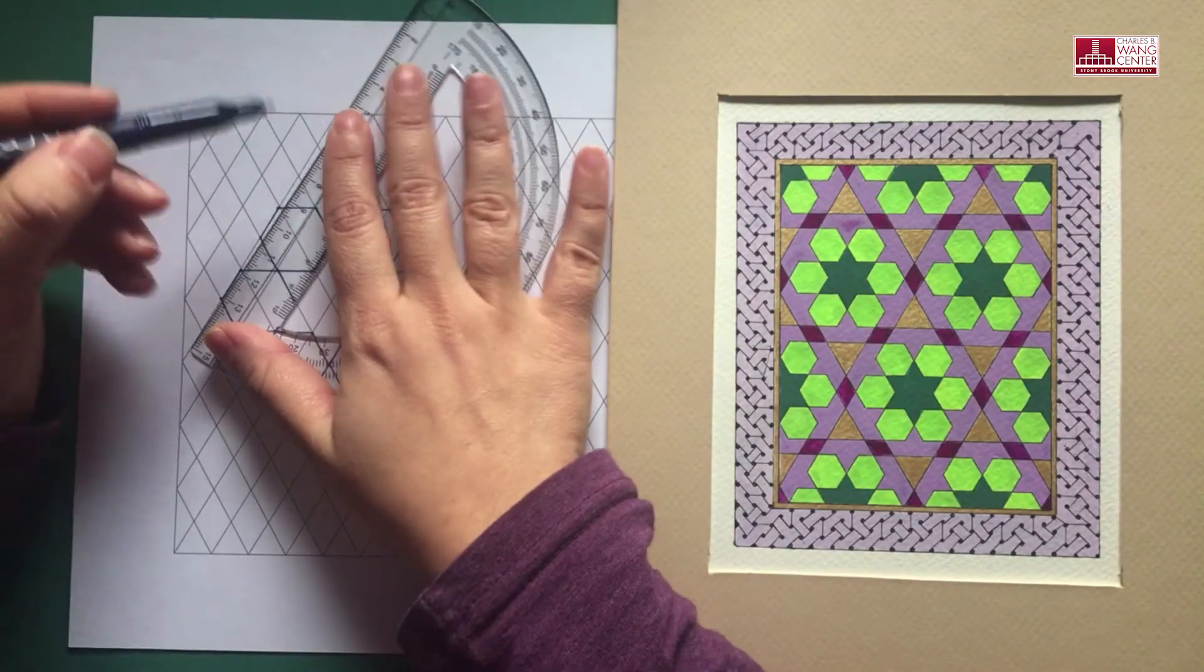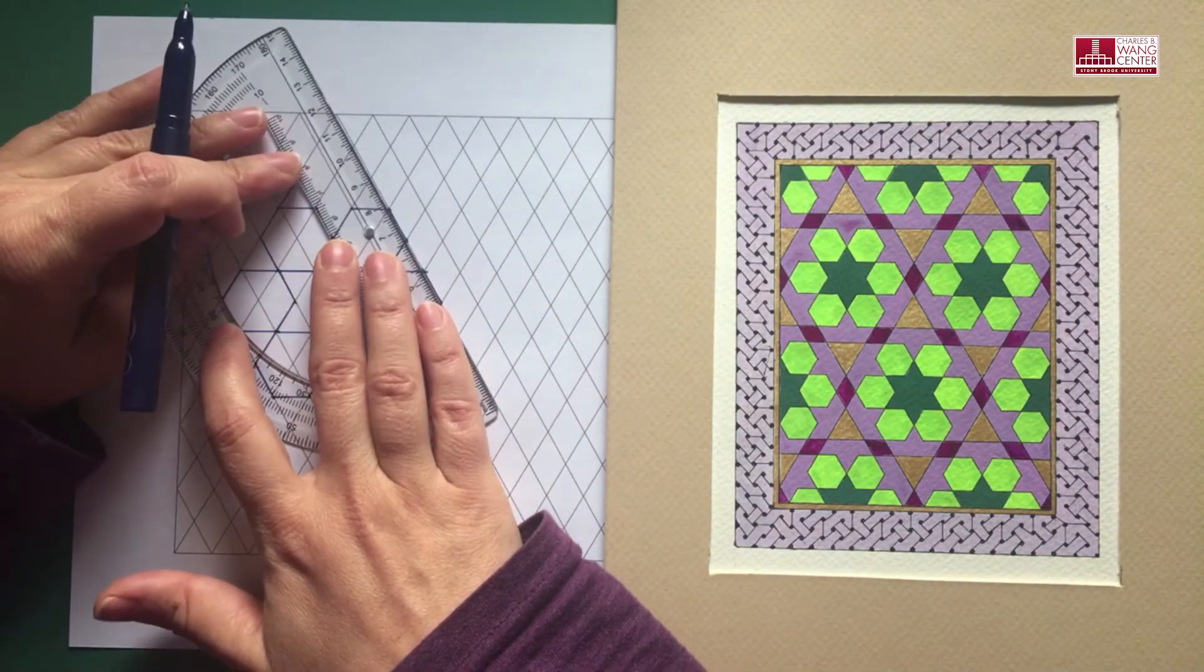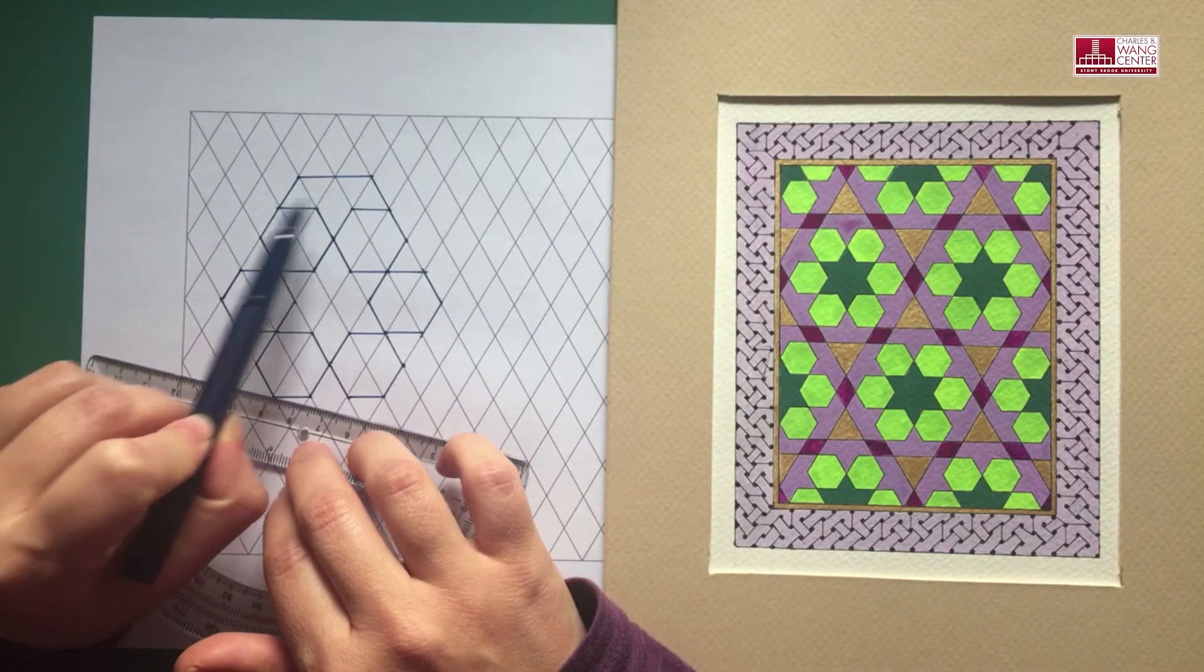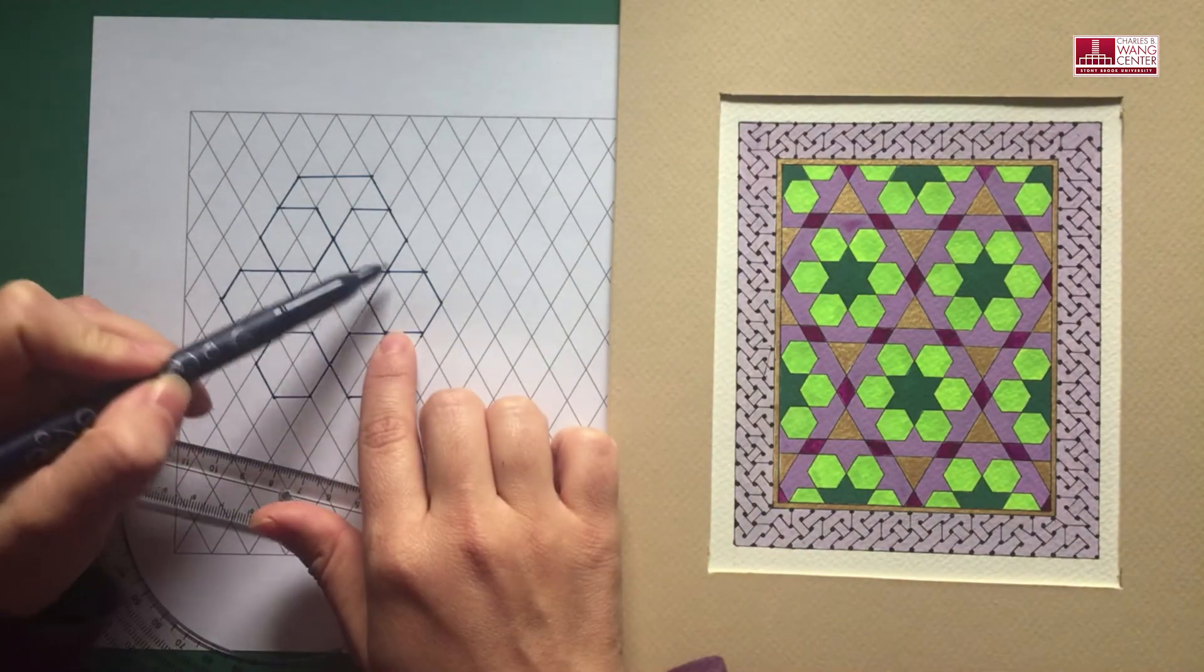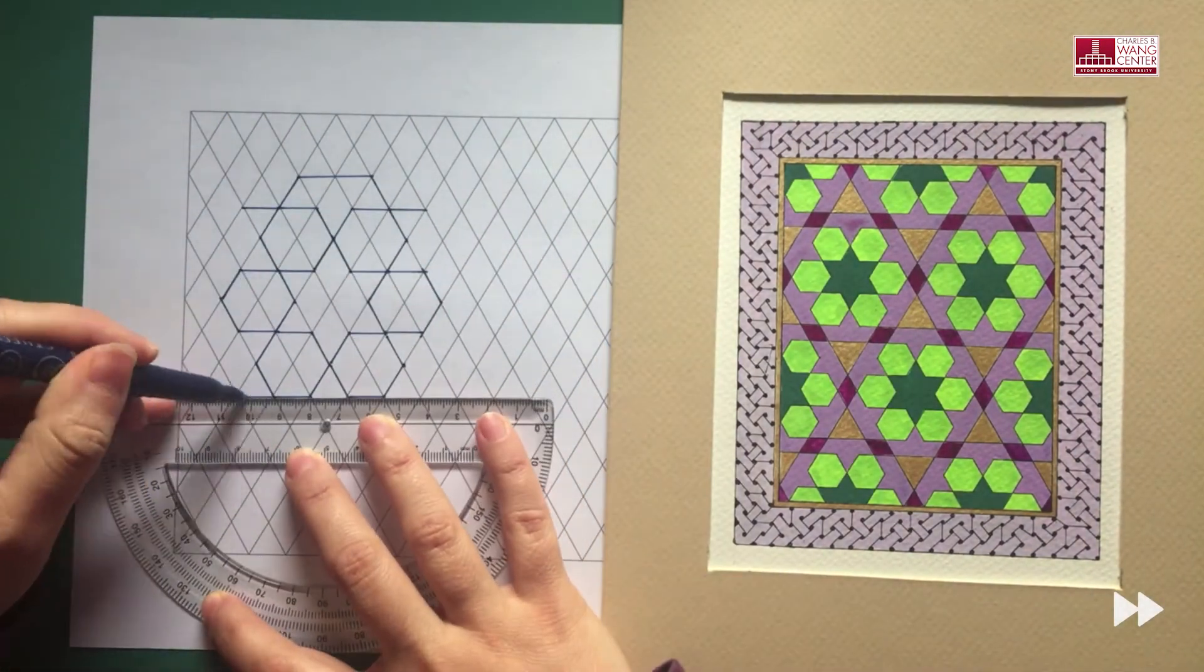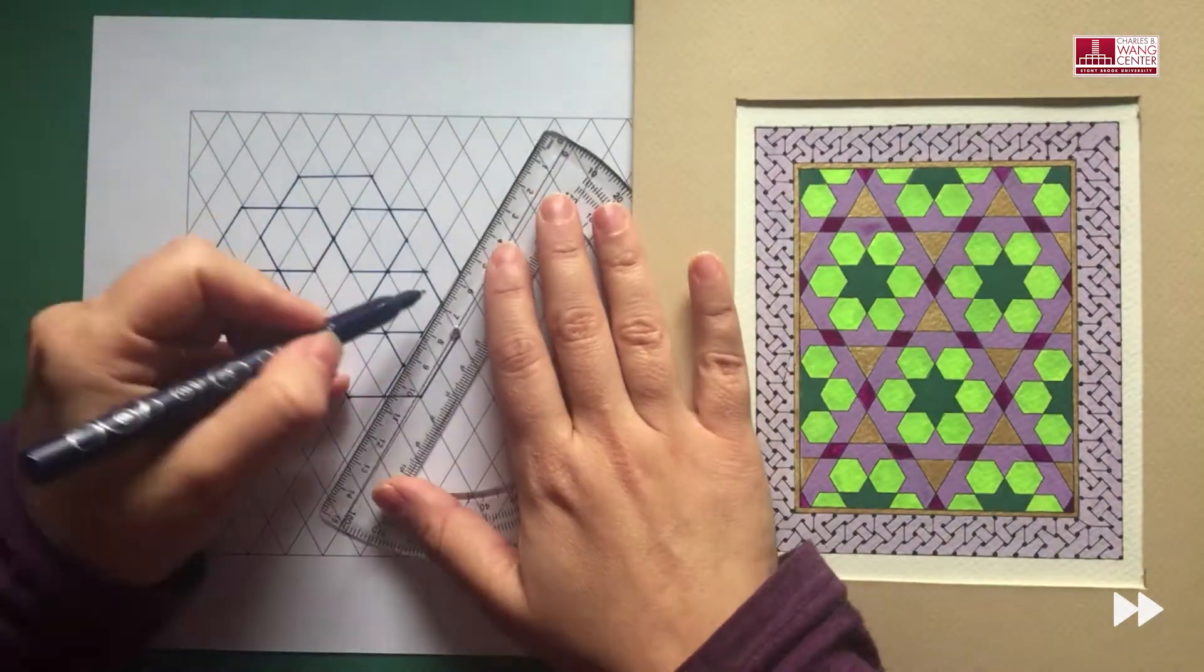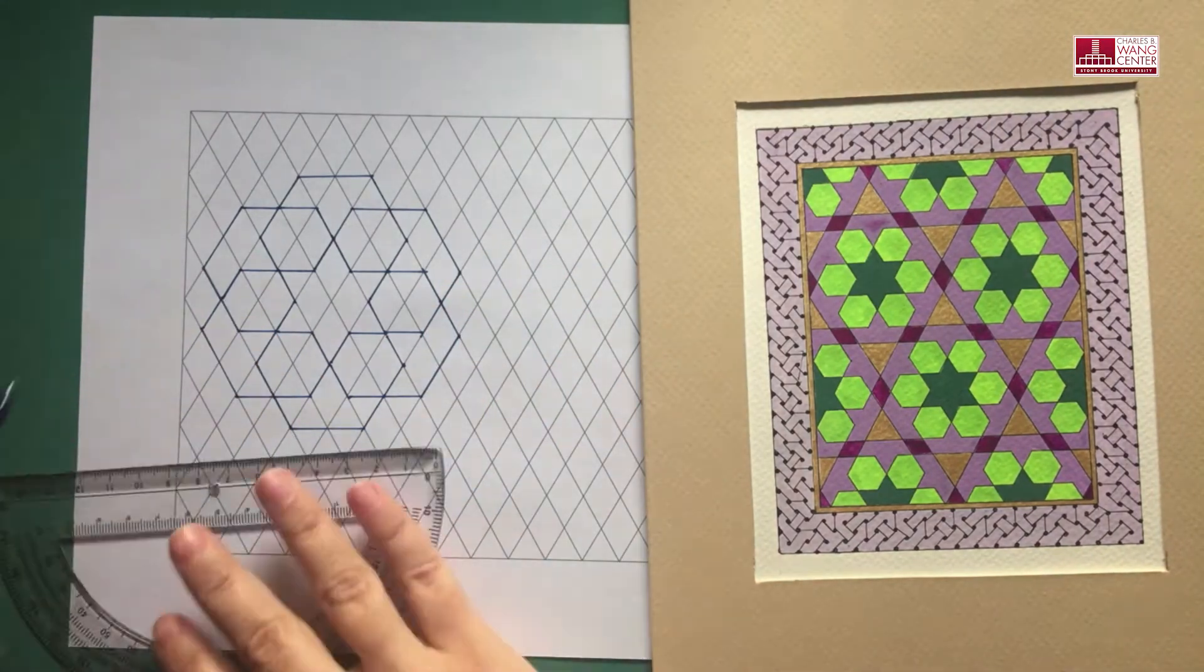So the only thing is to just continue the lines, the sidelines of the hexagon, one unit, going up and then connecting them together. So this boat shape is popping up. We are going to do it for the other sides between each of these two hexagons.